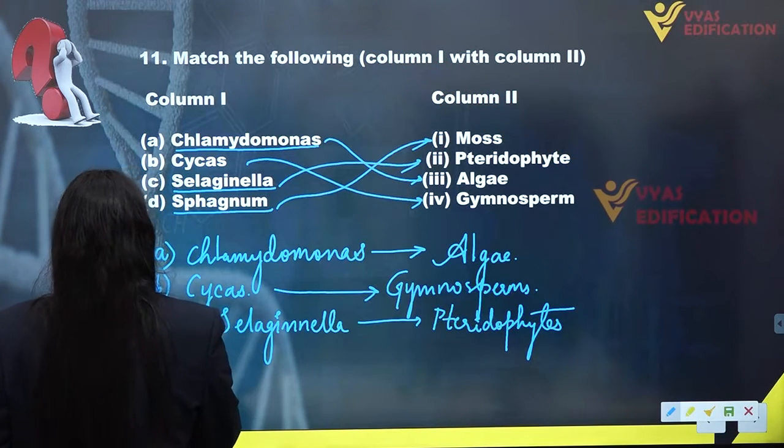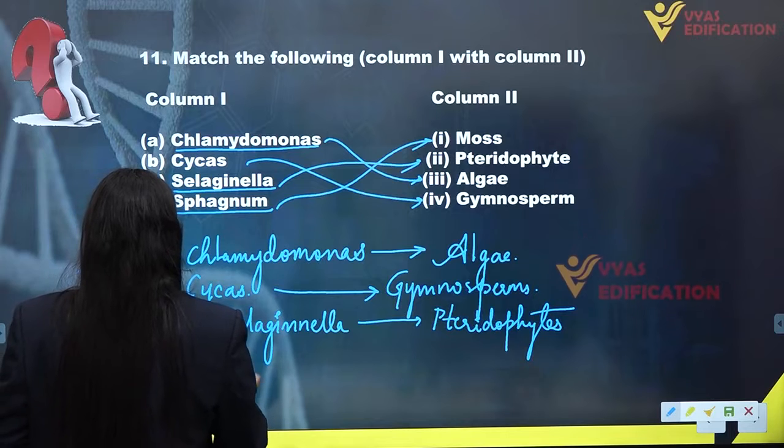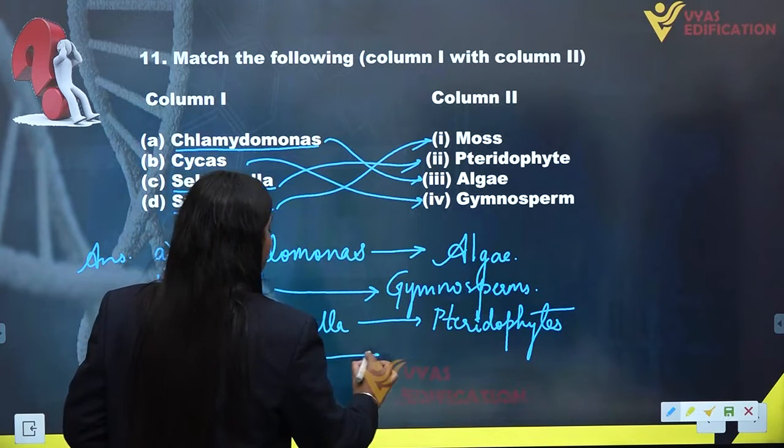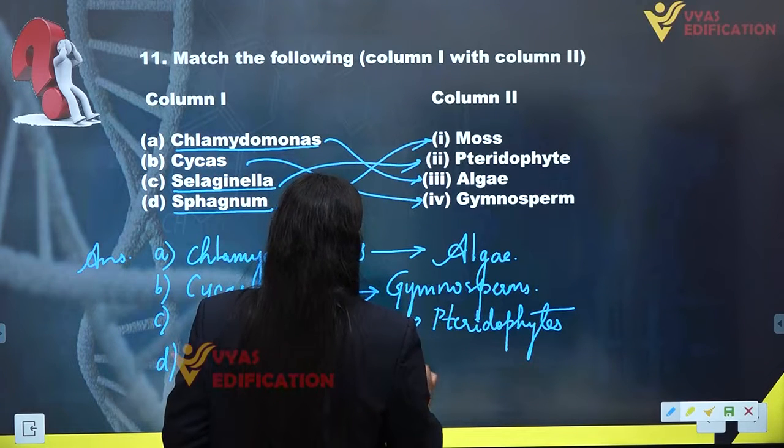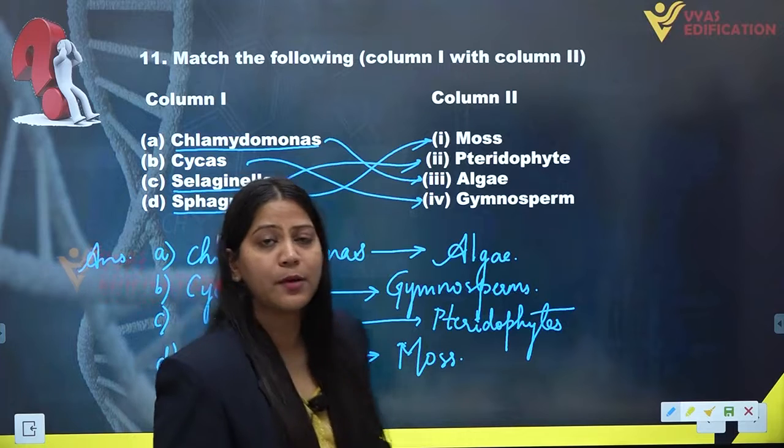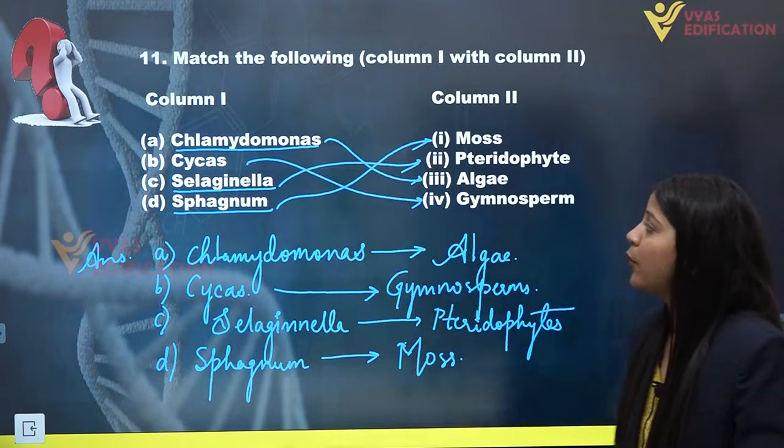And the last one we have is D: Sphagnum, which is a member of moss or bryophytes. So we have completed the solution of question number 11.